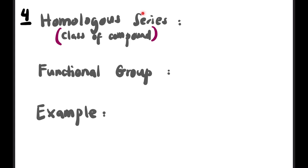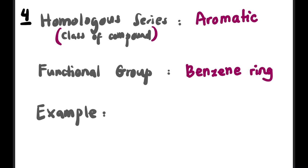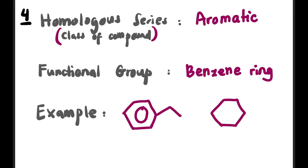The fourth homolog series is aromatic. Its functional group is called the benzene ring. The structure is cyclic with a ring in the middle. It can also be drawn as a hexagon with three alternating double bonds. This is the benzene ring, and the class of compound is aromatic.